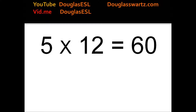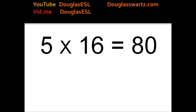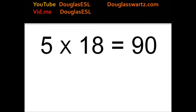5 times 12 equals 60. 5 times 13 equals 65. 5 times 14 equals 70. 5 times 15 equals 75. 5 times 16 equals 80. 5 times 17 equals 85. 5 times 18 equals 90. 5 times 19 equals 95.